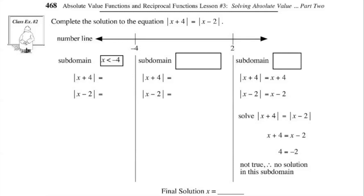Class example 2: complete the solution to the equation — the absolute value of x plus 4 equals the absolute value of x minus 2. For x plus 4, the critical point is where x plus 4 equals 0, giving x equals negative 4. For x minus 2, solving x minus 2 equals 0 gives x equals 2. So the number line has three sections with critical points at negative 4 and 2.